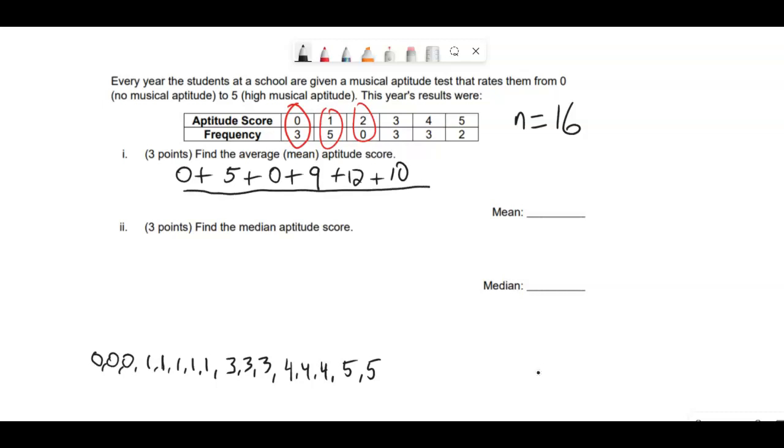This way saves us from having to write down what the frequency table represents. Now, the denominator, how we got sixteen, is just adding up the frequency numbers.